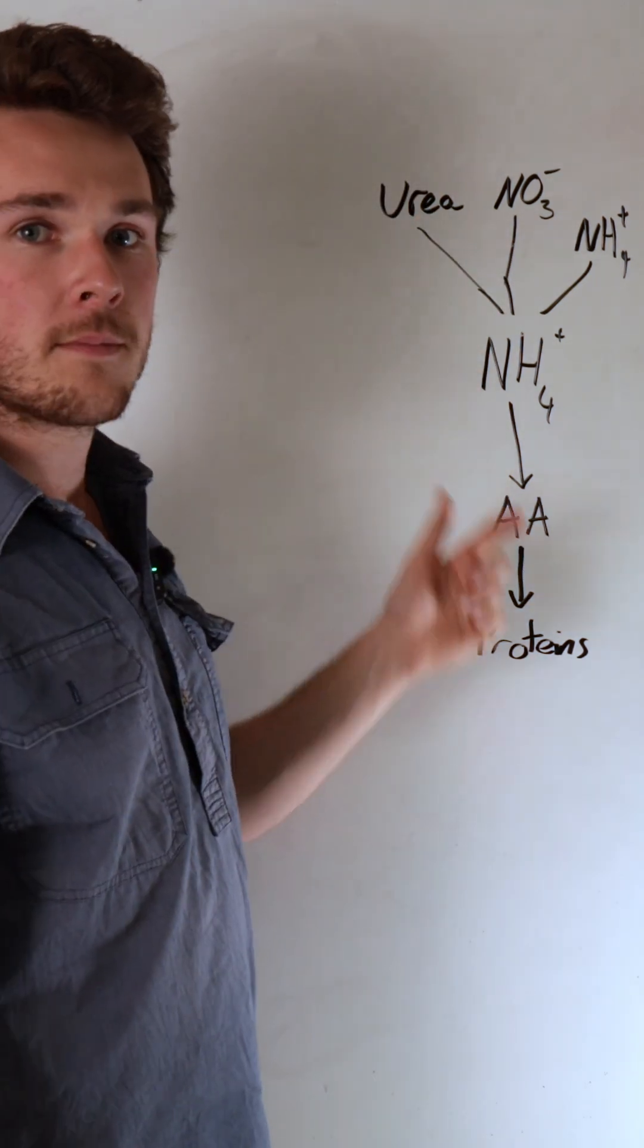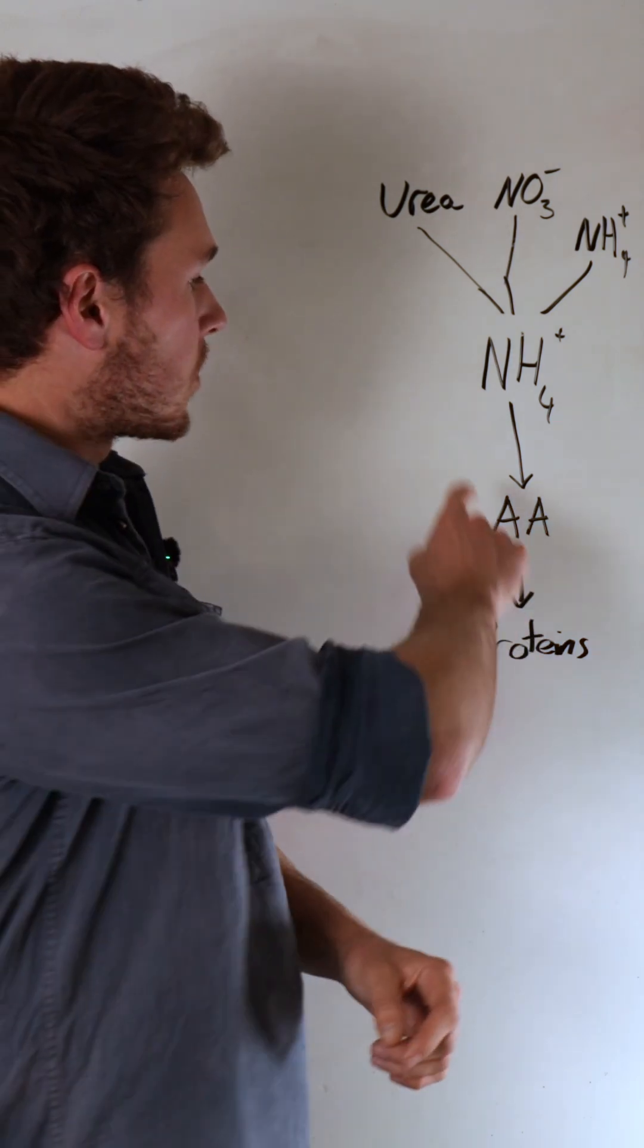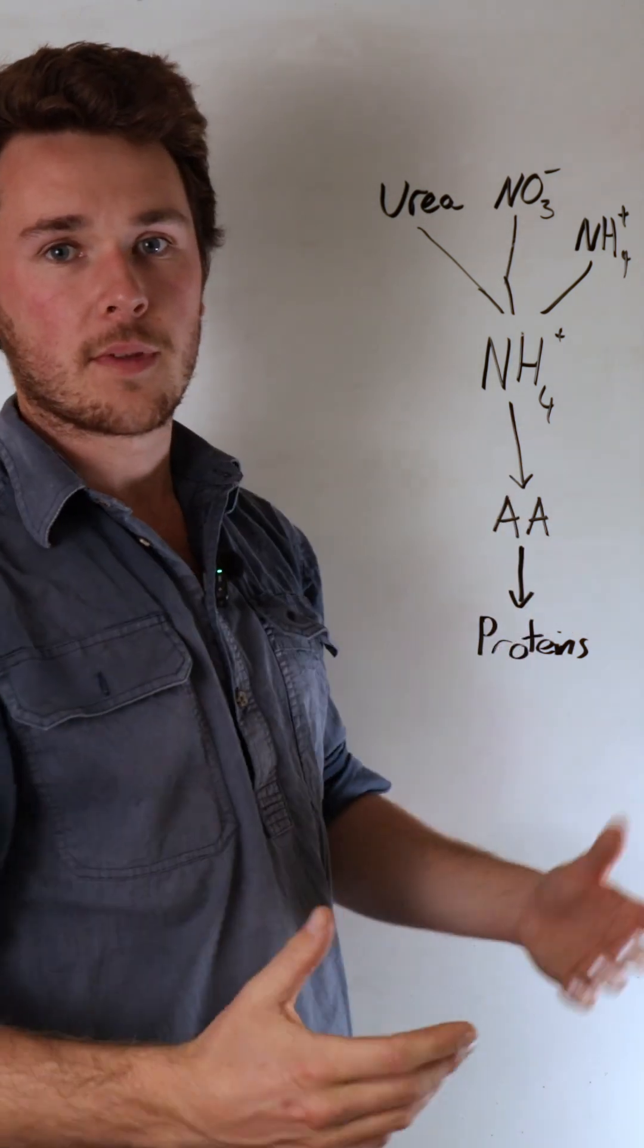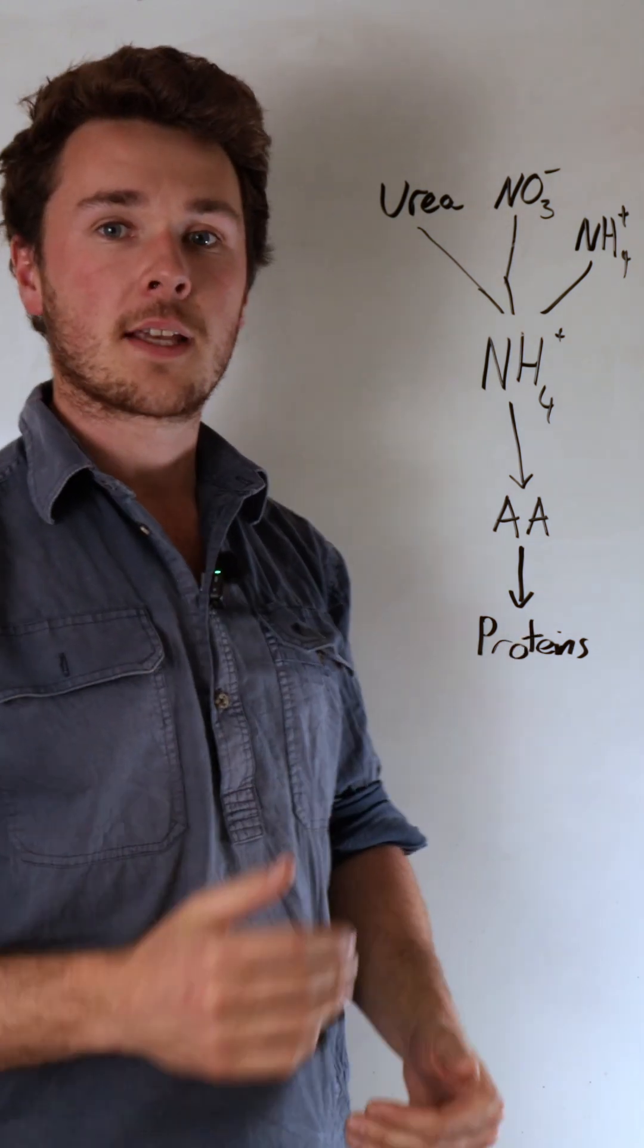Once it's in ammonium, it needs magnesium or manganese for glutamate synthase, which then converts it into glutamate or amino acid. It's super important. If you don't have these minerals, your plant can't process the nitrogen.